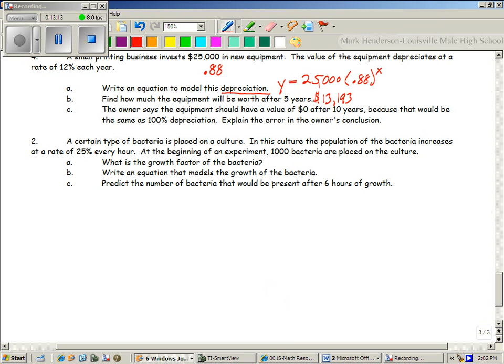A certain type of bacteria is placed on a culture. In this culture, the population of the bacteria increases at a rate of 25% every hour. Beginning of an experiment, 1,000 bacteria are placed on the culture. So is this growth or decay? So what did I tell you yesterday about growth? You add the one. Now, thinking about what I've been telling you today, why did I tell you yesterday to add the one in front of it? Because how far away it is from 100%. So if it's growth, it's above 100%, right? So this is 1.25.